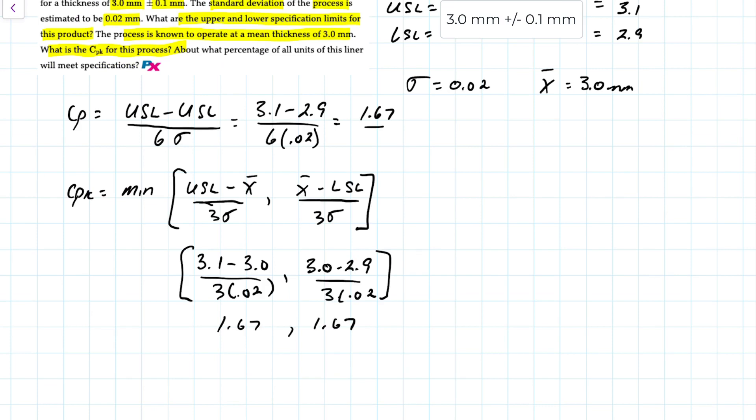What this tells us is that we have a very capable, in fact more than capable process. A CP of 1.67 means it's more than capable of producing within specifications and it's producing nicely around the mean and is not favoring either the upper or lower specification.